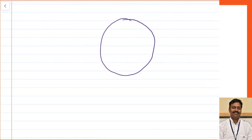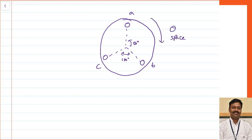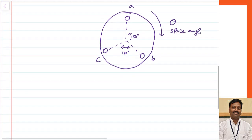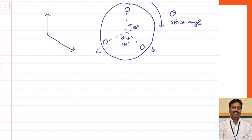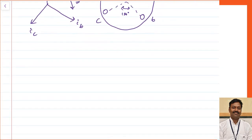Let us assume I have taken a machine where I have kept three conductors displaced by 120 degrees — conductor A, conductor B, and conductor C, displaced by 120 degrees. Let us assume this is my space angle theta. The current passing through these conductors is also displaced by 120 degrees: Ia, Ib, and Ic, rotating with respect to omega t.